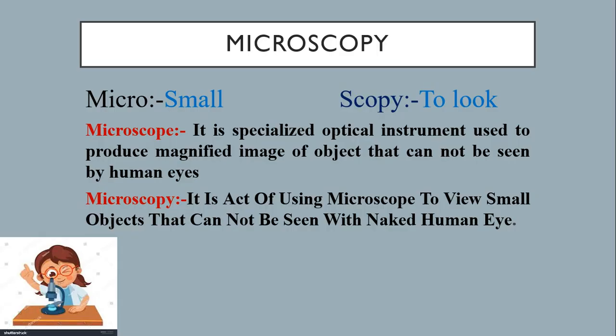Now, microscopy. Micron is the Greek word, micro means small. Small, ten to the minus 6 meter is called as micro. Scope is nothing but to look or to examine.